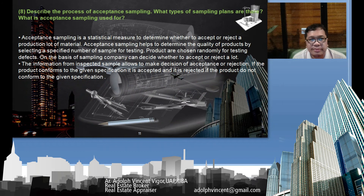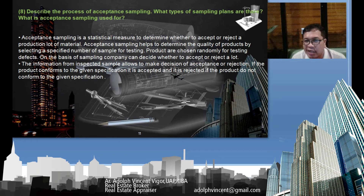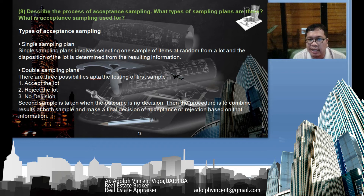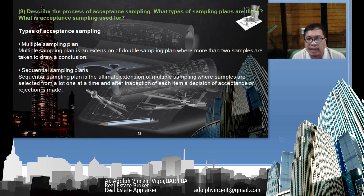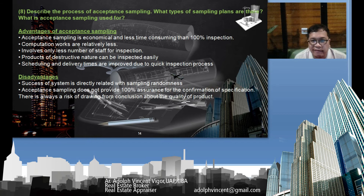The eighth question: describe the process of acceptance sampling, what types of sampling plans there are, and what acceptance sampling is useful for. Acceptance sampling is a statistical measure used to determine whether to accept or reject a product or material. Information from an accepted sample allows a decision of acceptance or rejection based on whether the product conforms to given specifications. The types include single sampling plans, double sampling plans, multiple sampling plans, and sequential sampling plans. Advantages include that acceptance sampling is economical and less time-consuming than 100% inspection.